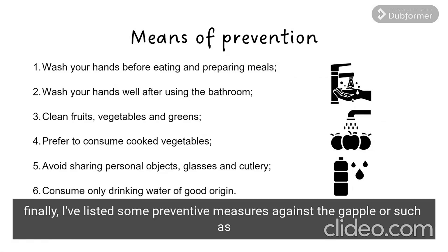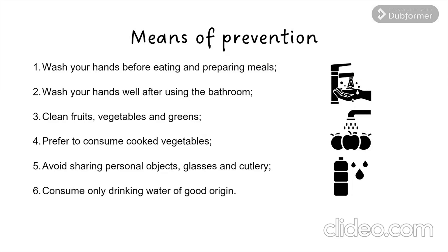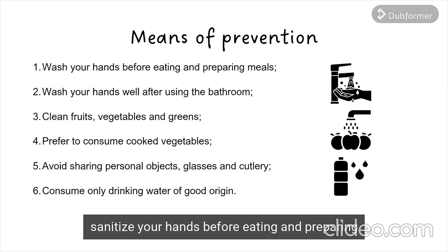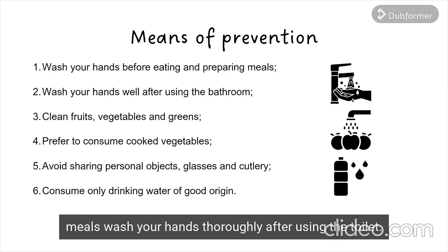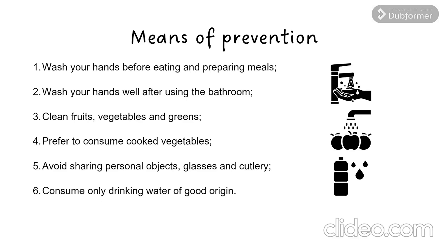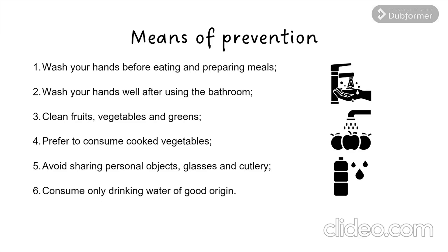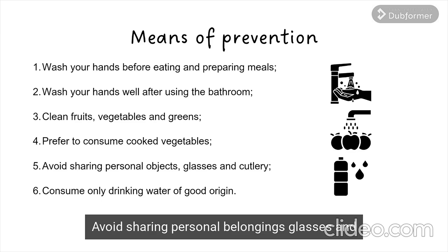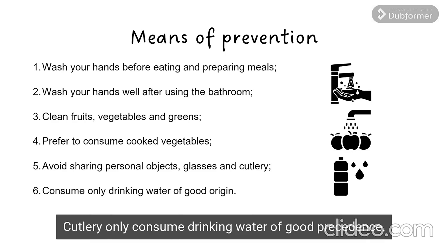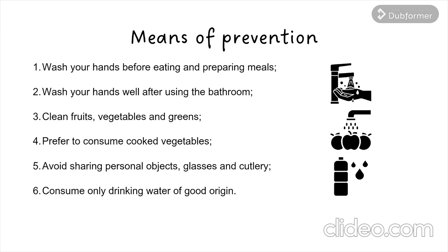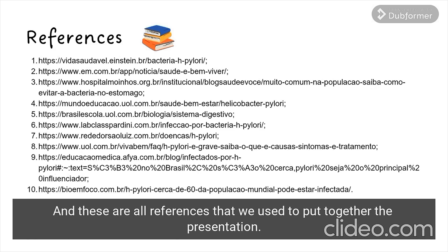Finally, preventive measures against H. pylori include: sanitize your hands before eating and preparing meals, wash your hands thoroughly after using the toilet, sanitize fruits and vegetables, prefer to eat cooked vegetables, avoid sharing personal belongings, glasses and cutlery, and only consume drinking water of good quality. And these are our references that we used to put together the presentation.